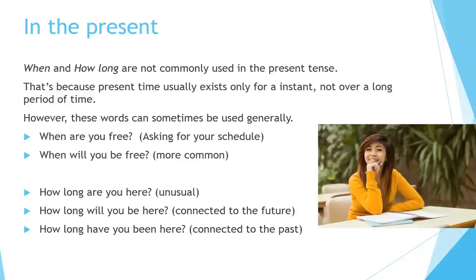In the present, when and how long are not commonly used in the present tense. That's because present time usually exists only for an instant, not over a long period of time. However, these words can sometimes be used generally. When are you free? We're asking about your schedule. It's more common to say when will you be free, because we're thinking about the future. How long are you here? That's kind of unusual. More common would be how long will you be here — connected to the future — or how long have you been here, connected to the past.